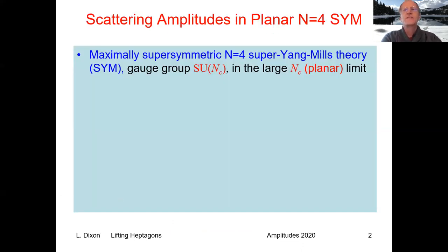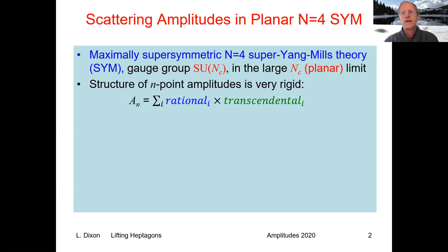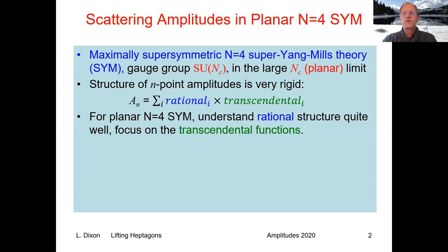The subject of this talk will be to look at how particles scatter in the maximally supersymmetric N=4 super-Yang-Mills theory with gauge group SU(Nc) in the large Nc or planar limit. The structure of amplitudes in this theory is very rigid. You can divide them into rational coefficients multiplied by transcendental functions. For planar N=4 super-Yang-Mills, the rational structure is understood extremely well. We'll focus entirely on what the transcendental functions are.